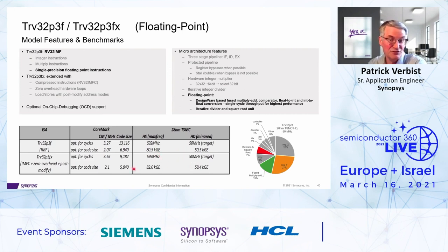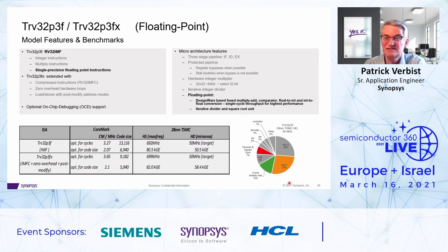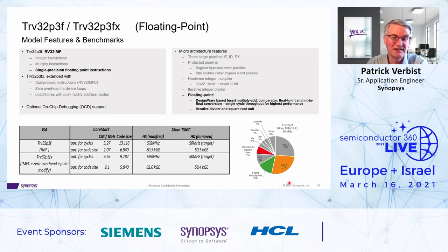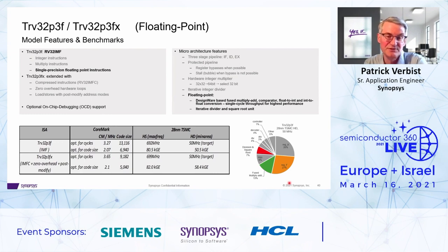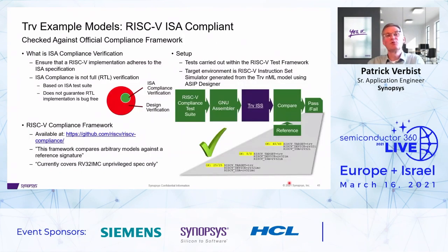The area goes up, obviously. On the right-hand side, you see the grayed-out pieces are from the integer core, while the colored pieces represent additional areas from the floating-point register file, the fused multiply-add, and the division square root operation.